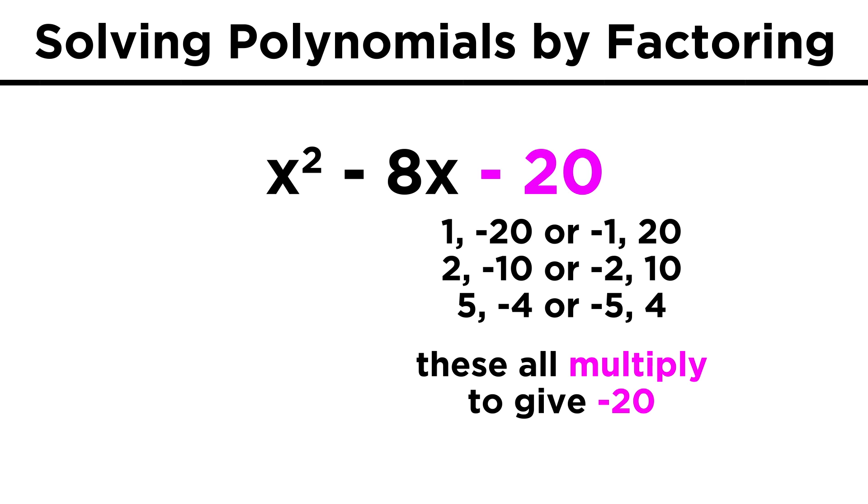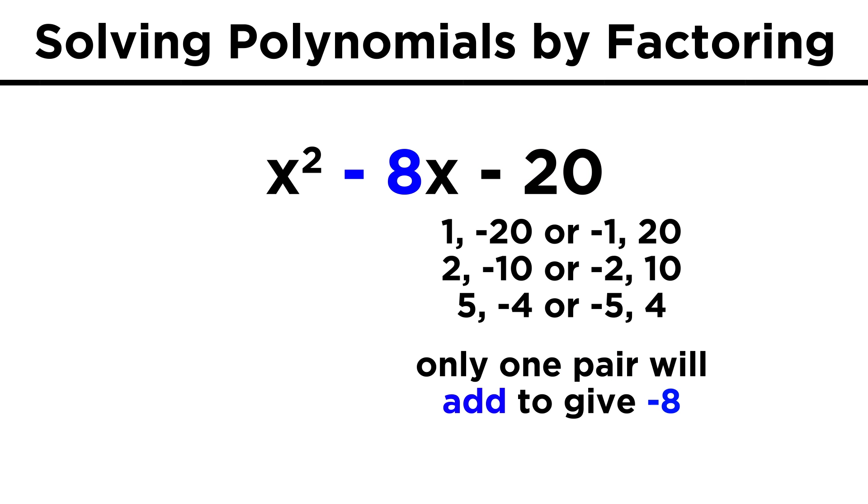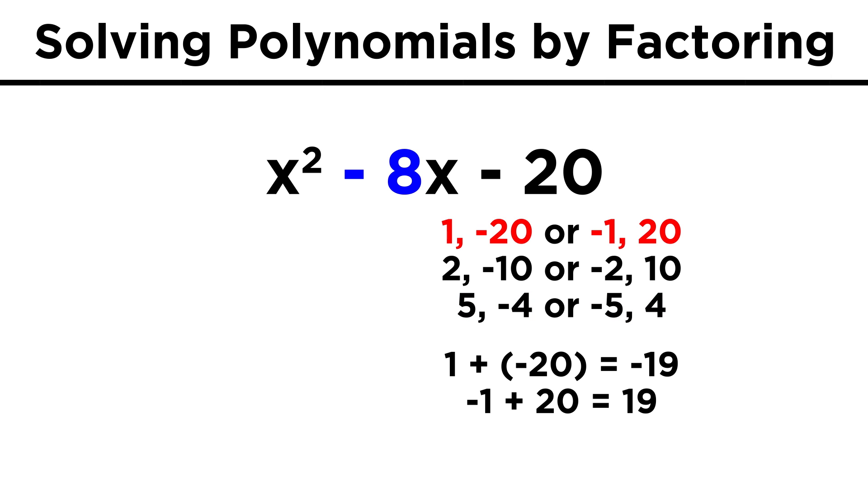But once again, though any of these pairs will multiply to give negative twenty, only one of them will add to give negative eight. We go through the options, trying the math in our head. Five and four is no good, nor is one and twenty.